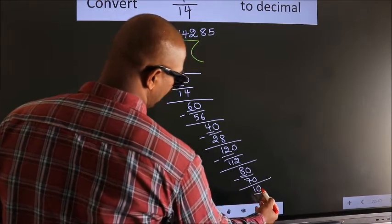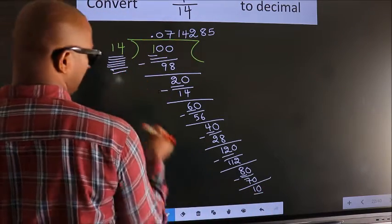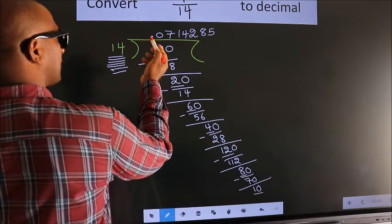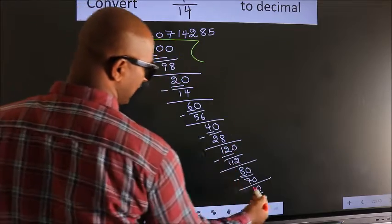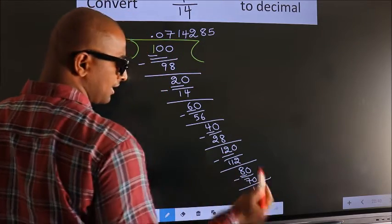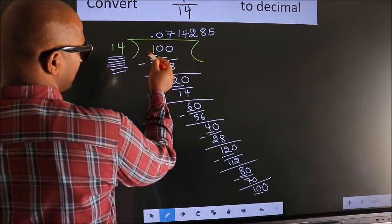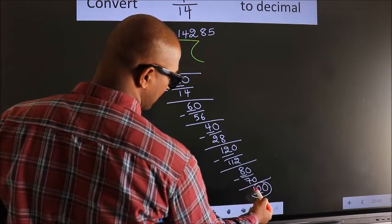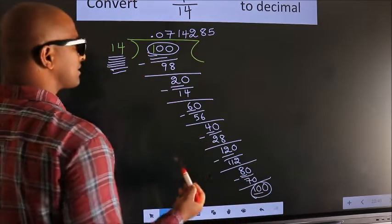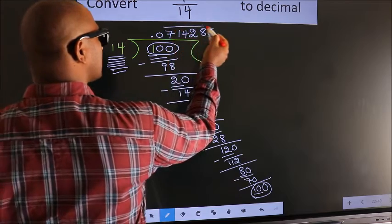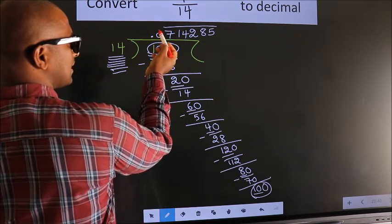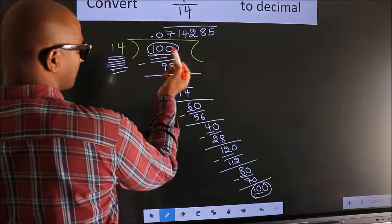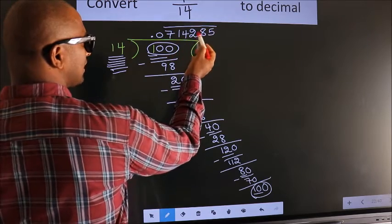Now here we have 10, here 14. 10 is smaller than 14, and we already have the decimal, so we can directly take 0. Now observe: here we have 100, and we got 100 again. That means we get a bar on these numbers. We don't get a bar on 0, because after placing 0 only we got 100. So we get a bar on only these numbers.